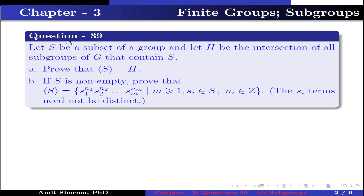Question number 39. Let S be a subset of a group G and H be the intersection of all subgroups of G that contain S. Part a: prove that the set generated by S is equal to H. Part b: if S is non-empty, prove that the set generated by S equals {s1^n1 · s2^n2 · ... · sm^nm}, where m ≥ 1, si belongs to S, ni belongs to ℤ, and the si terms need not be distinct.